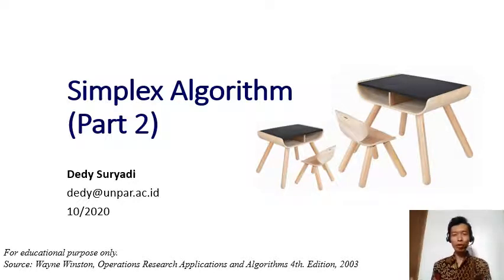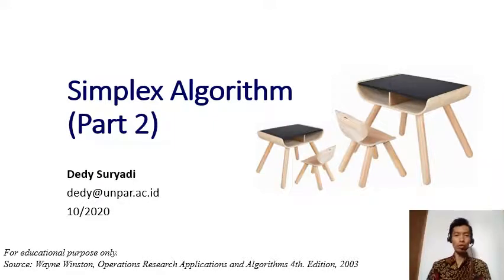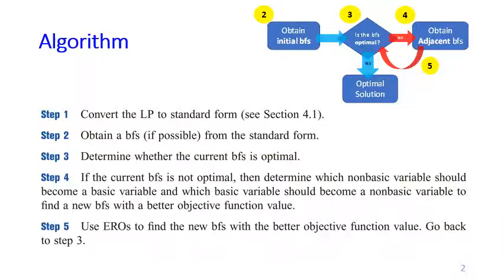In the first part of the video I talked about how we can do the first and second steps of the simplex algorithm: converting the LP model into standard form and then obtaining a BFS. In this video I'm going to talk about the remaining steps in the simplex algorithm until we get the optimal solution. We start from the BFS obtained in the first video and do step three: asking whether the current BFS is optimal. If not, we go to step four to obtain an adjacent BFS and step five to perform row operations to find the new BFS, then go back to step three.